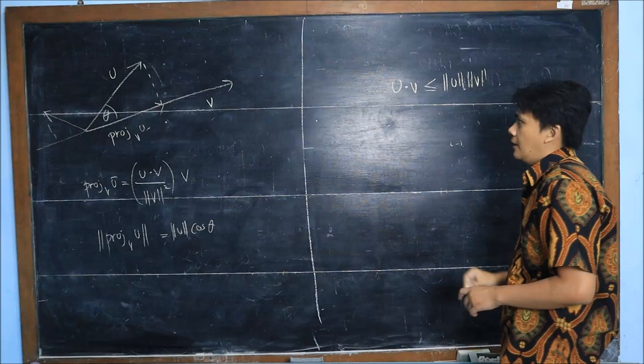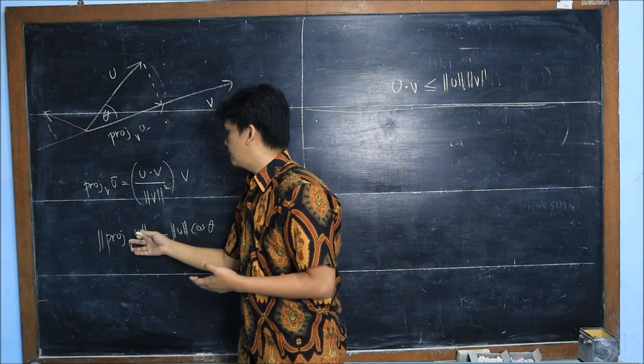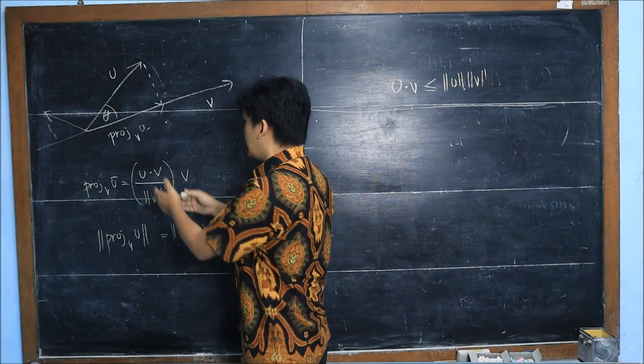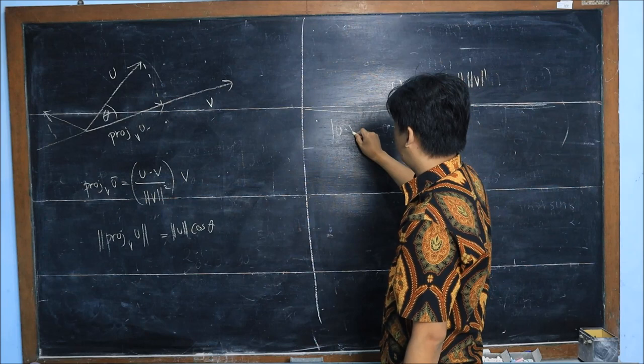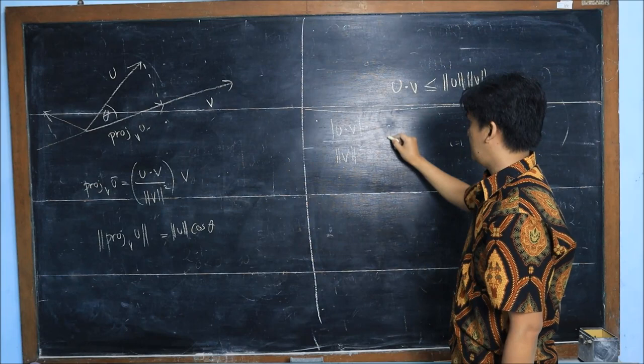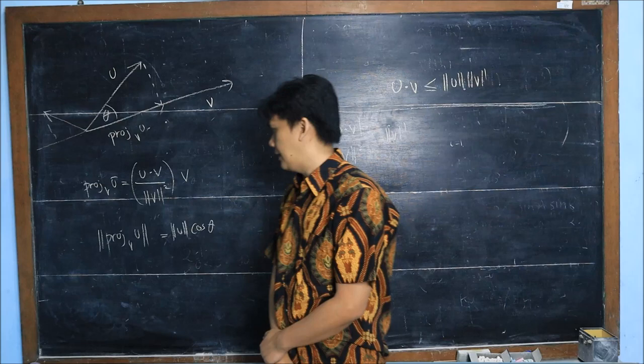Now let's replace this projection of u onto v by this expression. The length of this expression, since this is a scalar, we just take the absolute value of this times the length of v. The left hand side becomes the absolute value of u dot v divided by v squared, and the length of v.